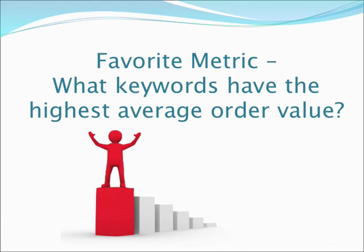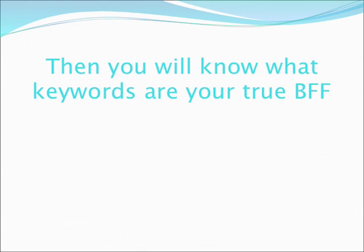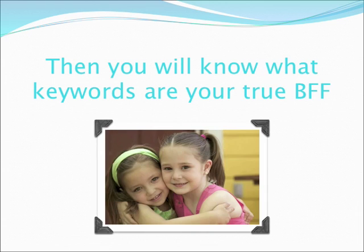Very quickly I can see some keywords that are in the $20–$40 range, and here I see a couple of keywords that are in the $80–$100 range. That immediately gets me to focus on figuring out which keywords are my BFFs. That's the second report — looking at average order value.